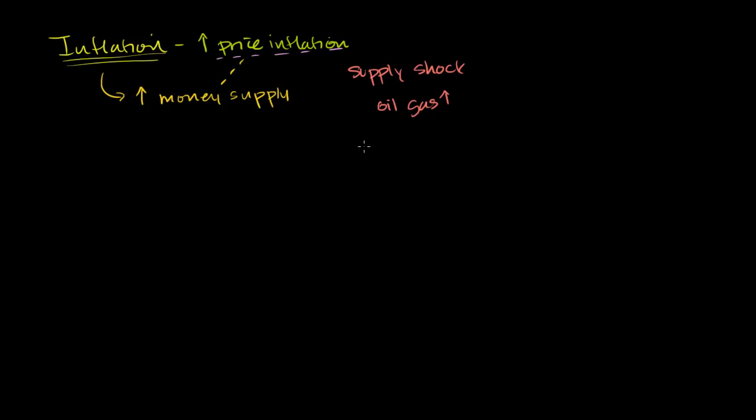But oil and gas are inputs into a whole set of things. Even that banana you buy at the grocery store—if the price of oil were to shoot up, even the price of your banana would shoot up, because to get that banana to your store, you need to use some gasoline. In fact, a significant fraction of that banana's cost in that store was probably the gasoline for that ship to take it from wherever it was grown to your grocery store, and then on a railroad, and then on a truck. So this would affect general prices, not just the prices of oil or gas.